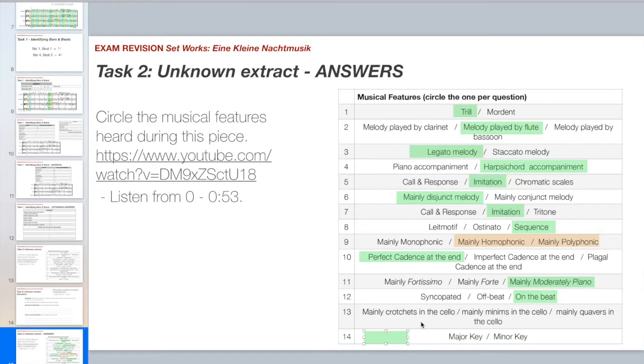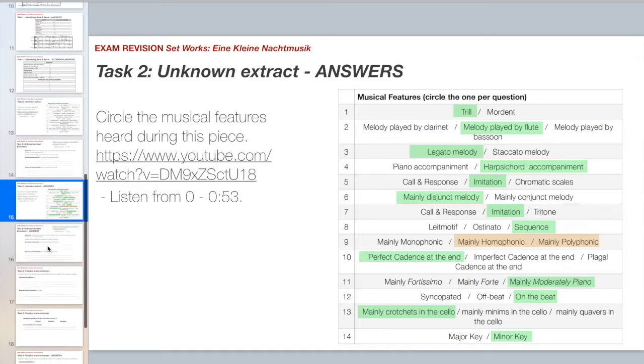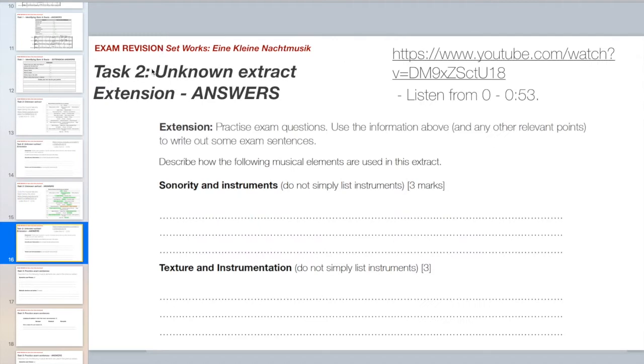Now were there mainly crotchets in the cello, minims in the cello, or quavers in the cello? It was crotchets. There were some quavers in the cello at some point but mainly it was kind of crotchet rhythm. If you're not sure just go back and listen again and it was in a major character minor key. Don't worry, I will help you more with listening to cadences and working out keys but lots of people say that you know it's a minor key because it sounds sad.